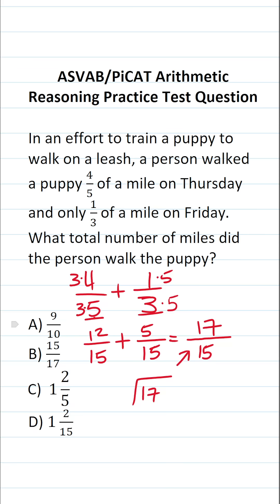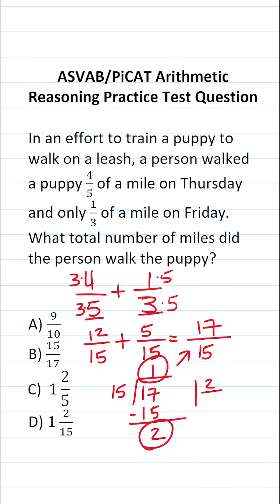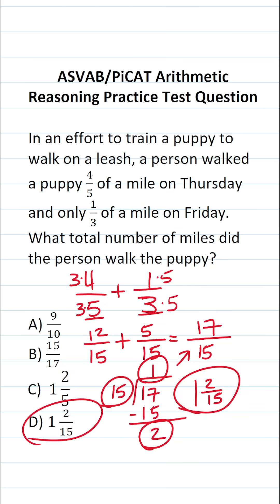That is to say, I can read this as 17 divided by 15. How many times does 15 go into 17 without going over? That's going to be one time. 15 times one is 15, and 17 minus 15 is two. Now I have enough information to write my mixed number: one as my whole number, this remainder of two as my numerator, and this 15 as my denominator. So the answer to this one is D — one and two fifteenths.